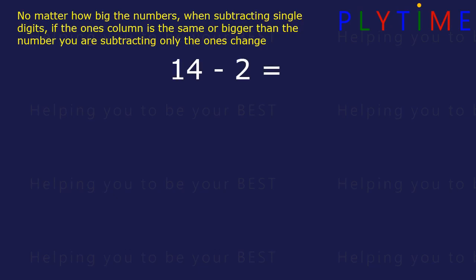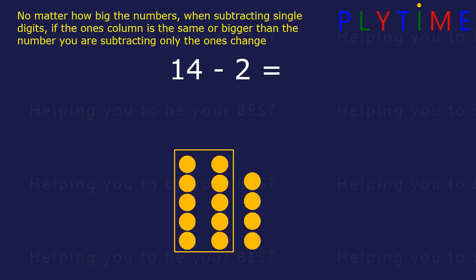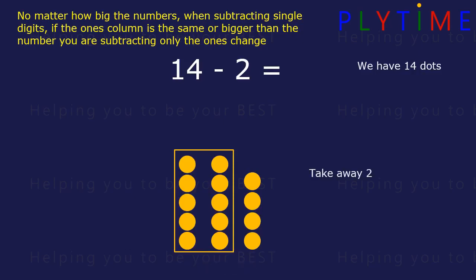Fourteen minus two. Fourteen is the same as one ten and four ones. We take away two, and we're left with one ten and two ones, or twelve.